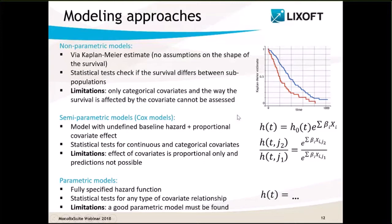Second, semi-parametric or Cox models assume that the hazard can be written as a baseline hazard that depends only on time, multiplied by a term that depends only on the covariates and not on time. Under this hypothesis of proportional covariate effect, one can analyze the effects of both categorical and continuous covariates parametrically, leaving the baseline hazard undefined. But this approach still has limitations: the effect of covariates is proportional only, and predictions are not possible.